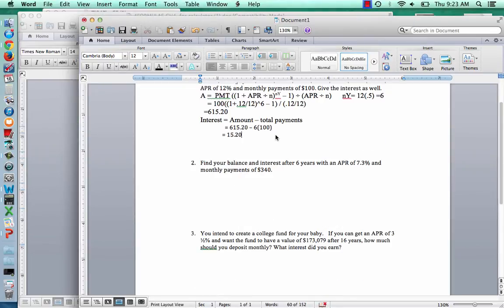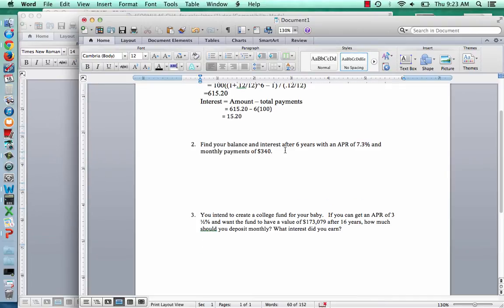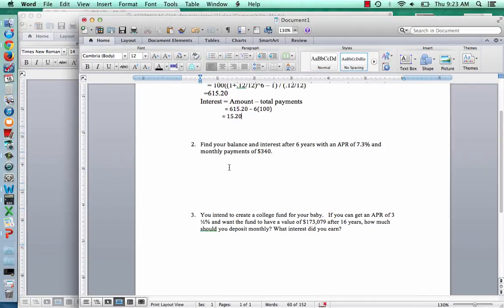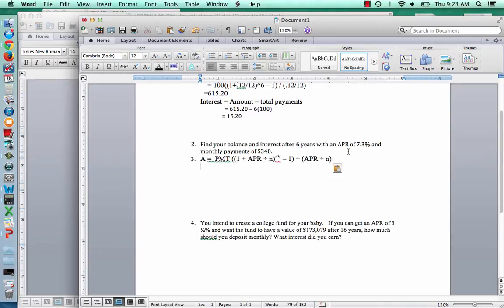Let's look at the next example here. Number two, it says, find your balance and interest after six years with an APR of 7.3% and monthly payments of $340. So we're imagining that you could budget out $340 each month. You want to see what it's going to grow to after six years. Once again, since we know the payment, we're going to use formula 7, so I'll paste that in here. We're using this formula, and let's type it in.